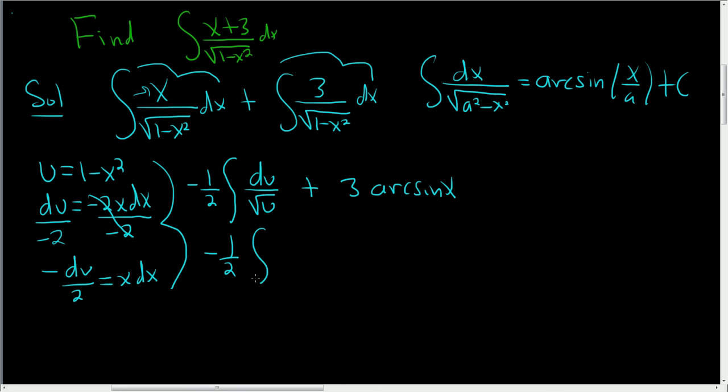To finish this, we're going to bring this upstairs, and it'll become negative, because the square root of u is u to the 1/2. Then we have the du plus 3 arcsin x.